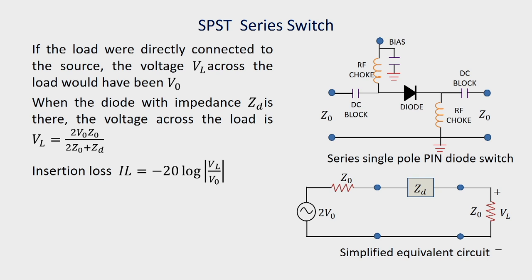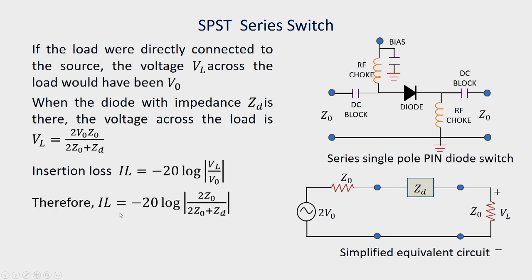The insertion loss IL is defined using VL, the voltage when the diode is present, and V₀, which would have been the voltage if the load were directly connected to the source. Insertion loss is given by minus 20 log of |VL/V₀|. Substituting the expression for VL/V₀, we obtain the insertion loss for a series switch.